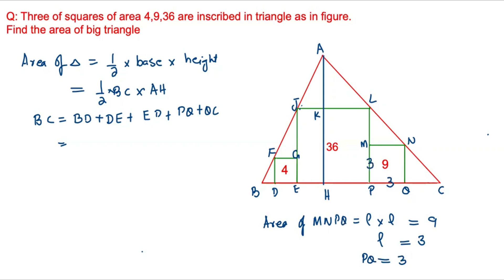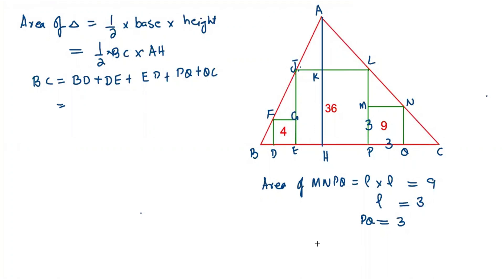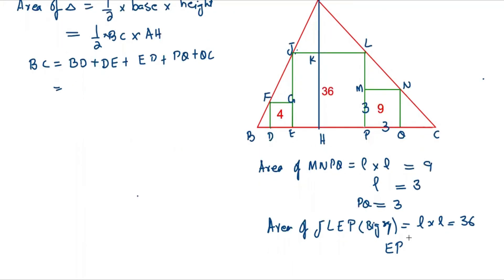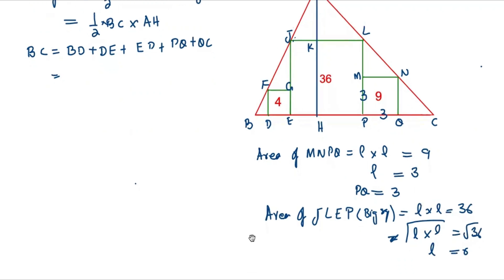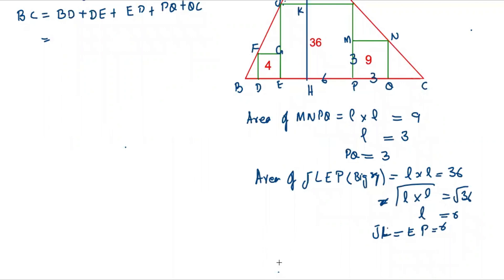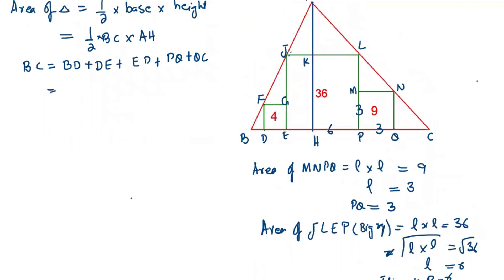For the bigger square JLEP, the area equals length times length, which equals 36. Taking the square root gives length equal to 6. Therefore EP equals 6 and JL equals 6. For the smaller square, the area is 4, so the length equals the square root of 4, which is 2. Therefore DE equals 2.